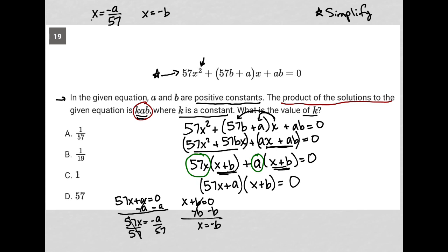When I take the product of these two solutions, I get negative A over 57 times negative B. The question told me that that should be equal to KAB. Simplifying the left, negative times negative is positive. So this ends up being AB over 57 equals KAB.